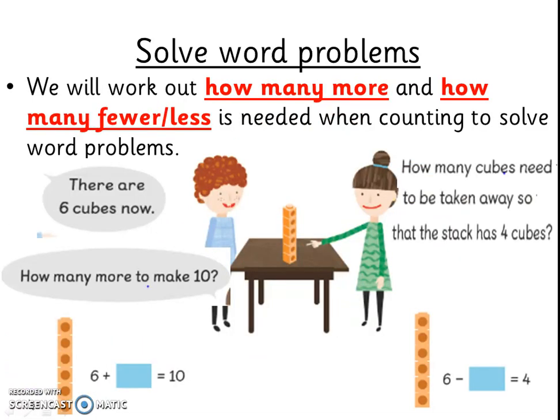In the next lesson, we will work out how many more and how many fewer or less is needed when counting. Here you can see a tower of six cubes on the table. To find out how many more is needed to make ten, we have to count and add more cubes. However, if we only wanted four cubes left from the six cubes, we will have to subtract or take away some cubes. So the words how many more means to add, and how many fewer or less means to take away.